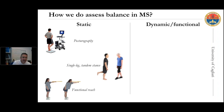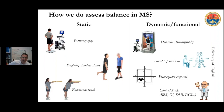In multiple sclerosis, assessment of static or dynamic balance can be performed. For static balance, very simple clinical tests like single-leg stance, tandem stance, or functional reach can be used, though the gold standard is static posturography using a force platform. For dynamic functional balance, things are a bit more complicated because the gold standard — dynamic posturography — is a very complex technique not widespread even in research laboratories.